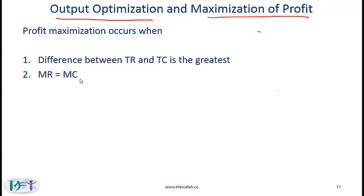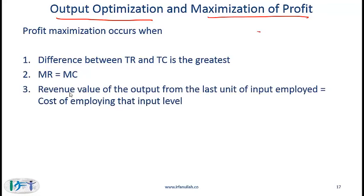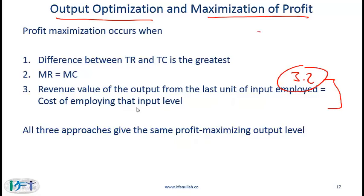This is what I said on the previous slide and we will talk about why this is the case. The third way of coming up with your profit maximizing output is to say that the revenue value of the output from the last unit of input employed is equal to the cost of employing that input level. This will be covered in section 3.2 of the curriculum. These are actually three different approaches of coming up with profit maximization and all three approaches will give the same profit maximizing output level — in other words, these three are equivalent.